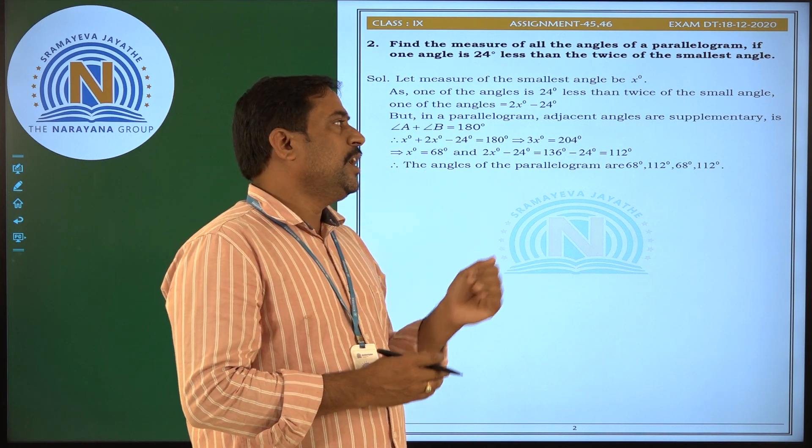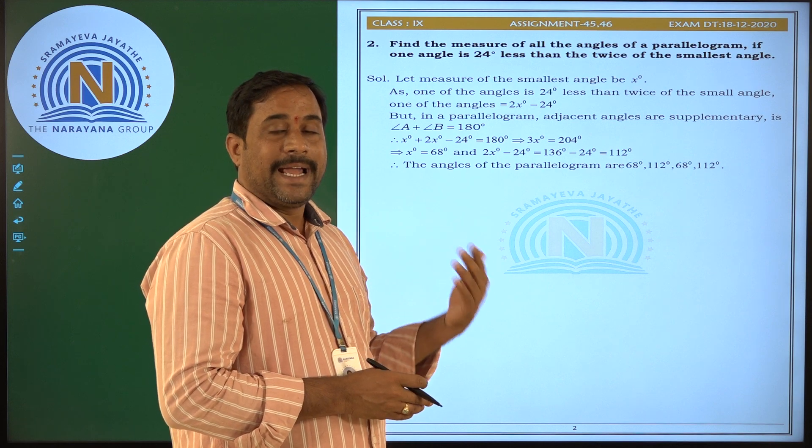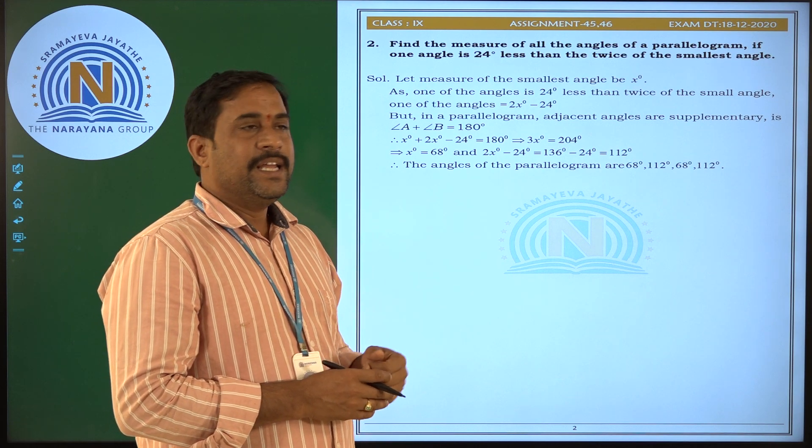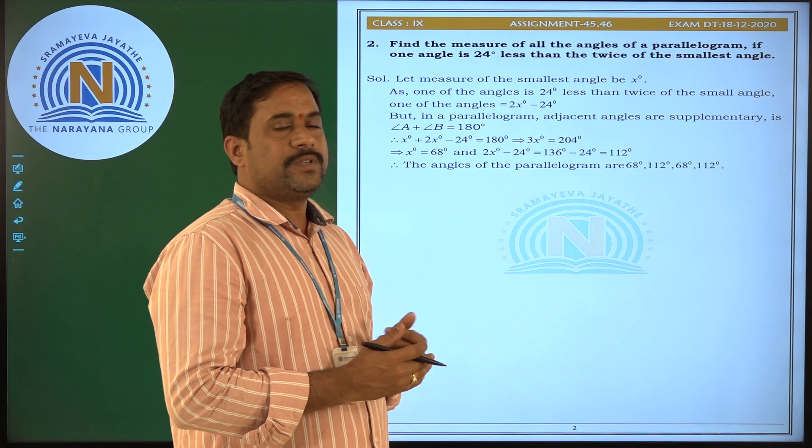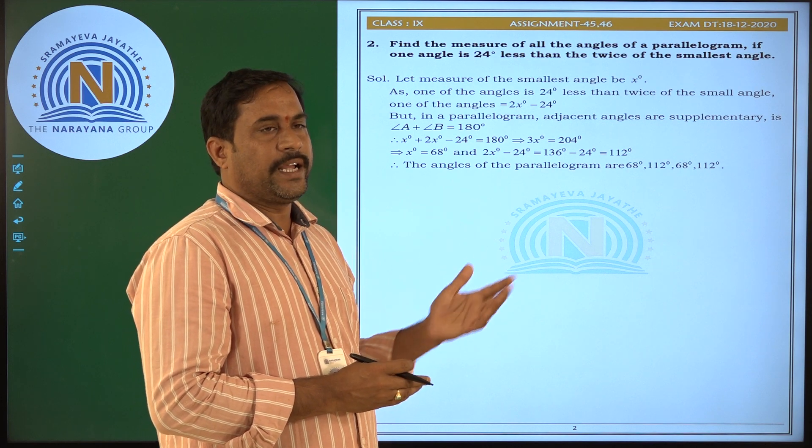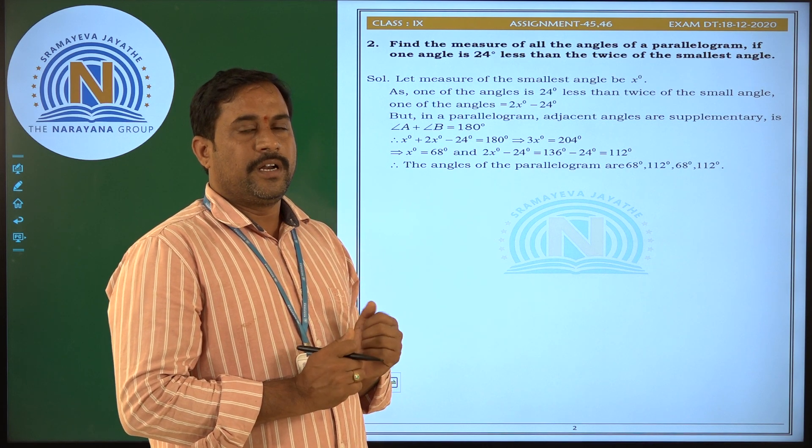Another angle will be 112. So the angles of the parallelogram will be 68, 112, 68 again, and 112. Like that, four angles of a parallelogram.